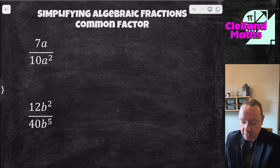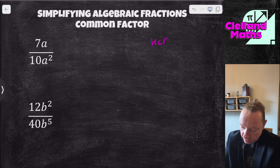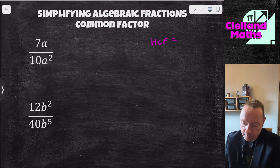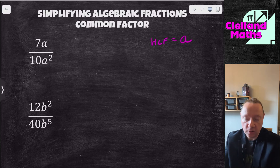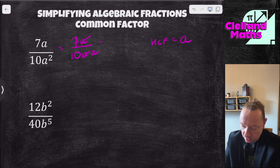Let's look at simplifying algebraic fractions with a common factor. I've got 7a and 10a squared. Checking the number parts: 7 and 10 have no common factor. But a and a squared share a as the highest common factor — it's the smallest power. So taking a out, I've got 7a and 10a squared written as 10 times a times a, and the a's cancel out, giving 7 over 10a.